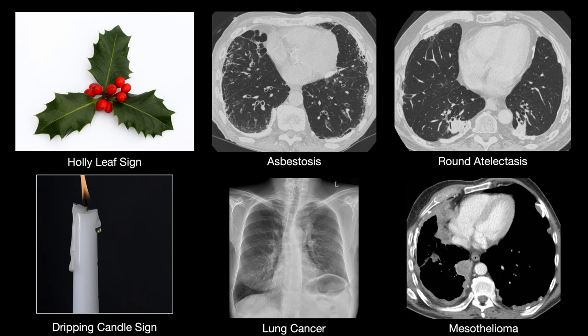This has been a review of asbestos-related pleural plaques on chest x-ray and CT. Remember the holly leaf sign and the dripping candle sign. And remember those four entities we talked about if you see a patient with asbestos exposure: asbestosis, round atelectasis, lung cancer, and mesothelioma. If you have any questions about this topic or any other chest radiology topic, let me know in the comments.